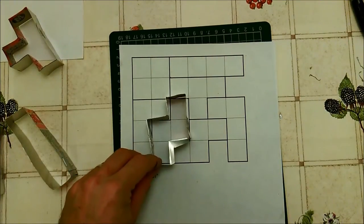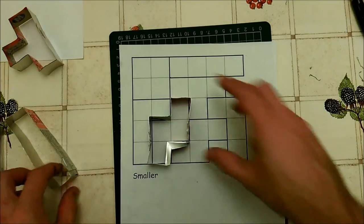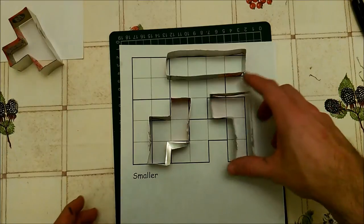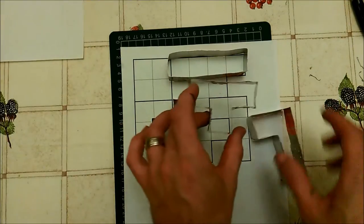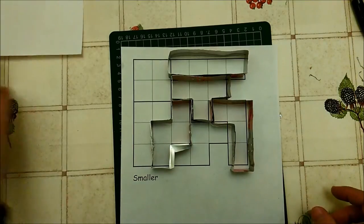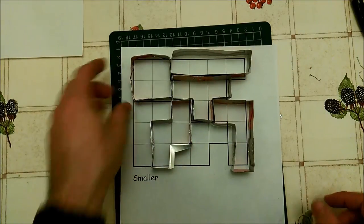And then once you've finished you should have all your different Tetris pieces. As you can see in the bottom piece here I've added a little corner piece on because I accidentally snapped it. A corner piece here stapled in place on those two Tetris sides can help massively with strengthening a Tetris cookie cutter.